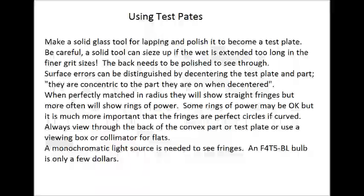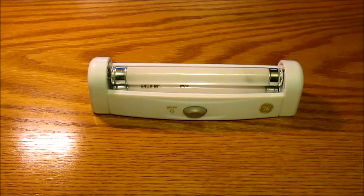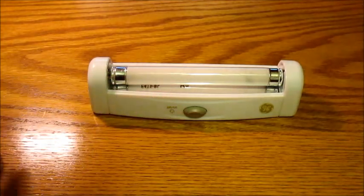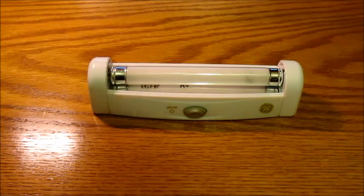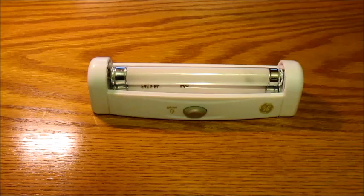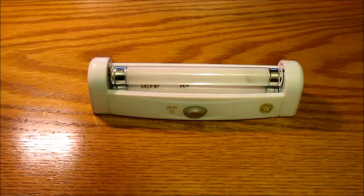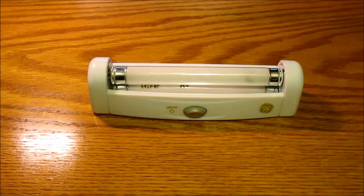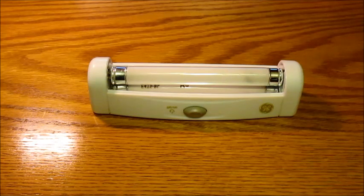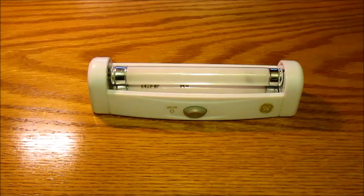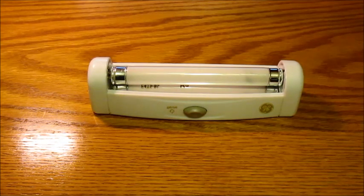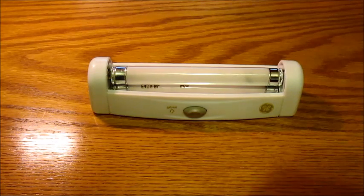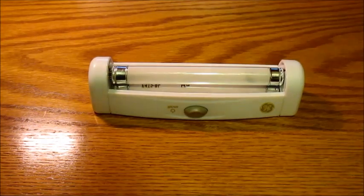You can use neon lamps or any other gas discharge lamps, but the F4T5 is pretty cheap on eBay if you want to use that for fringe testing. This is a fixture I use. This is a little fluorescent six-inch fluorescent fixture from Walmart. I think it's like six bucks now, and the bulb is a F4T5 BL for black light. It produces a nice monochromatic mercury spectrum light, and you'll see red-blue fringes, but that works very nicely.